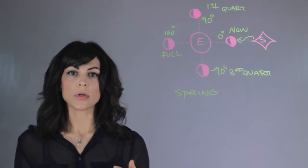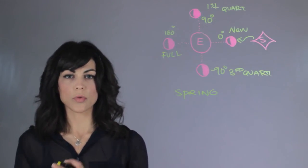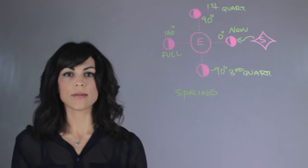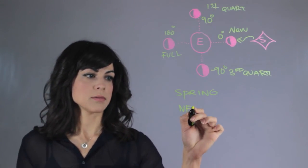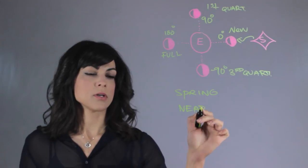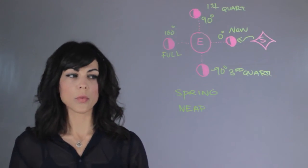So now the Sun and the moon are no longer adding the gravitational forces into the tides, but instead they're taking away from each other, and this is called a neap tide. So therefore, during the quarter moon, we have neap tides.